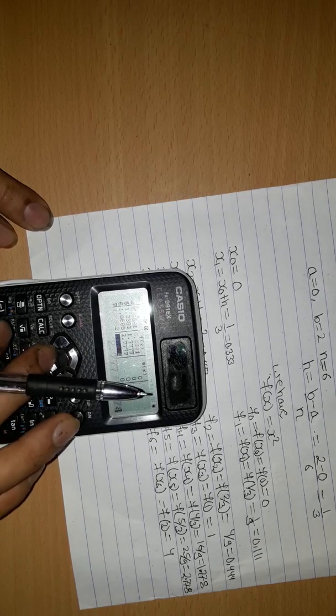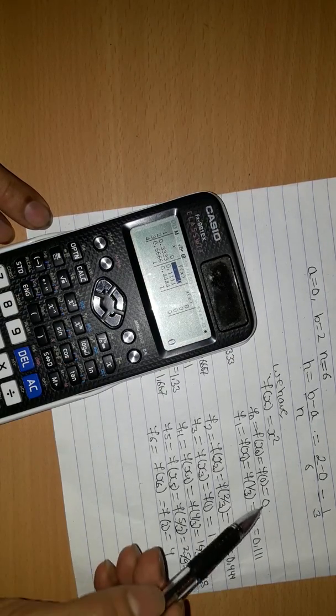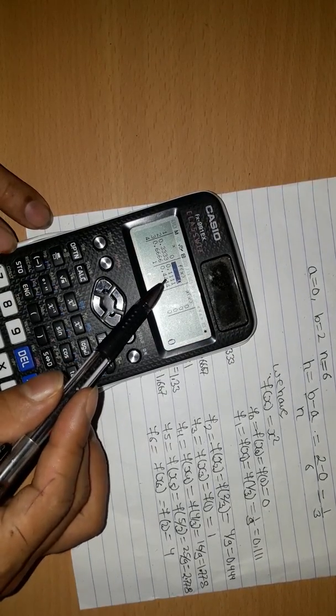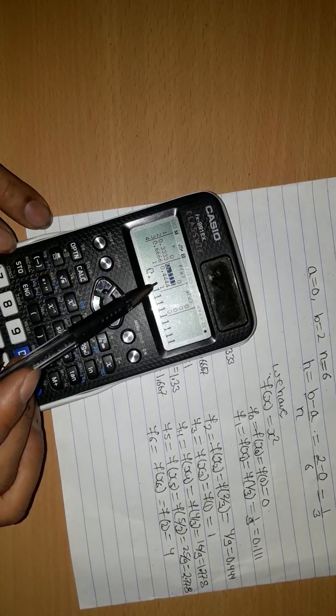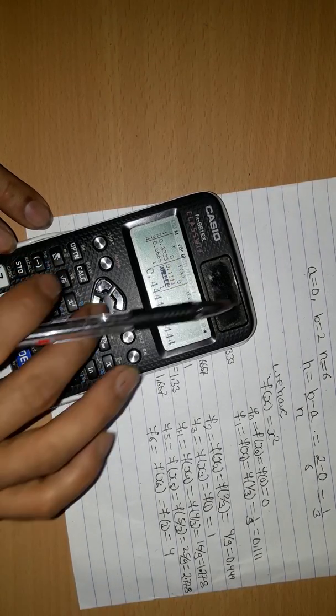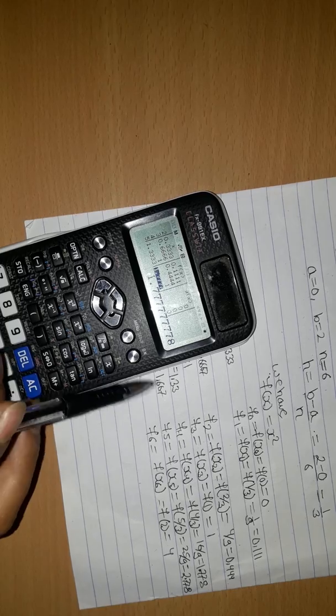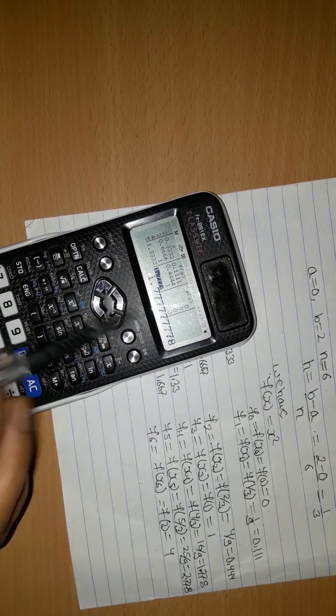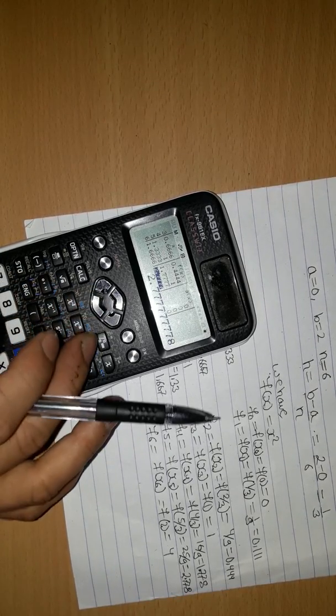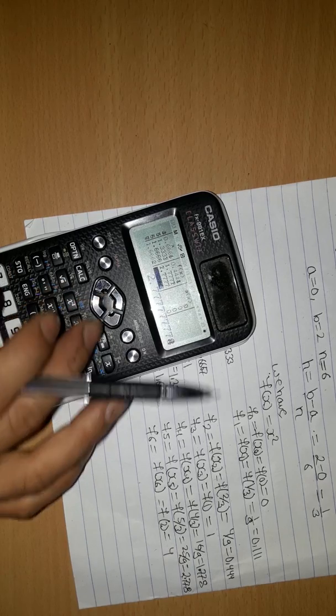And F(X) is equal to 0, 0.11, 0.4401, 1.778, 2.778, 4.